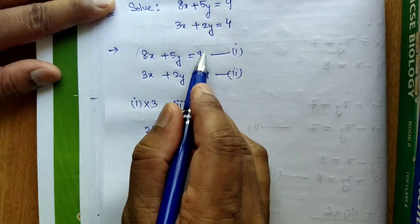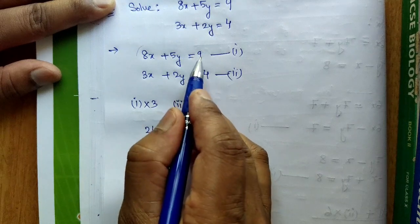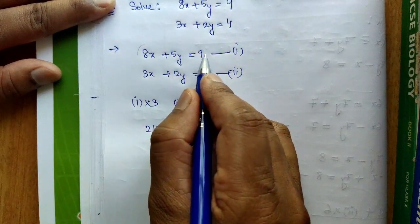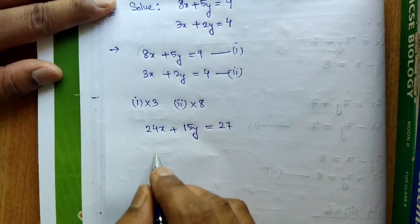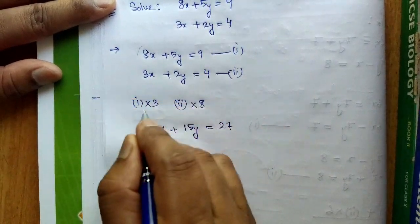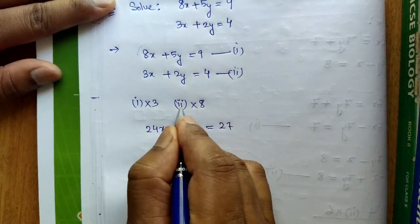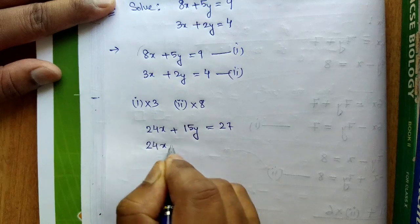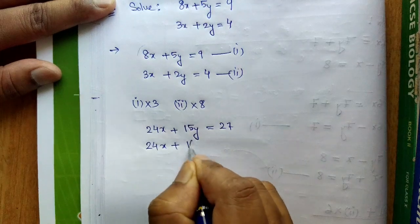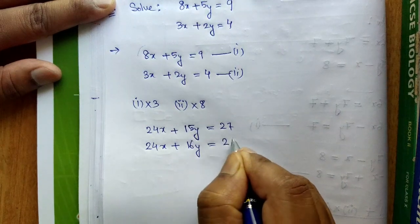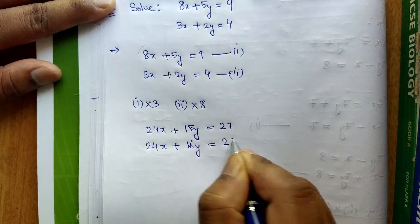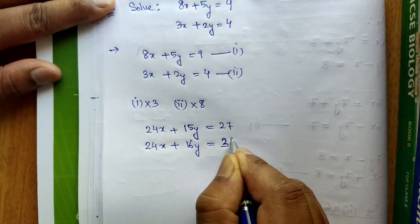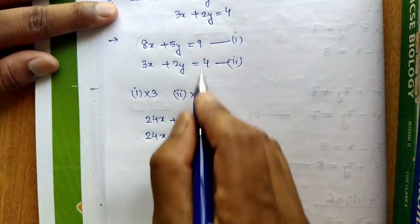Many students make the mistake of forgetting to multiply the constant term — be careful. Now multiply Equation 2 by 8: 3x times 8 gives 24x, 2y times 8 gives 16y, and 4 times 8 gives 32. So the second equation becomes 24x plus 16y equals 32.